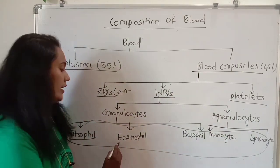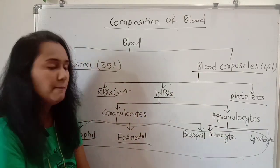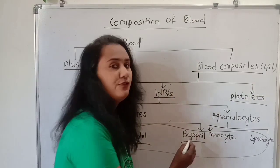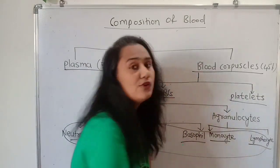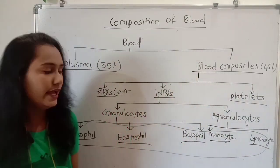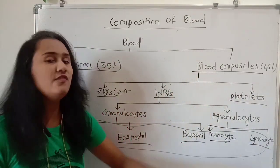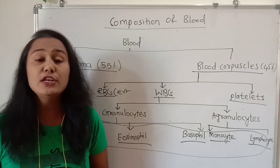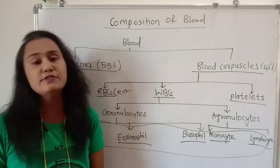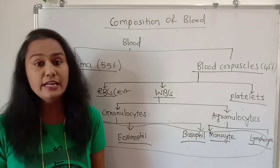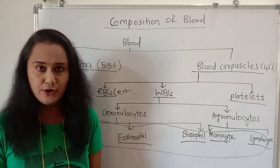The five types are: neutrophil, eosinophil, basophil, monocyte, and lymphocyte. These are the five types of leukocytes, means WBC, which are present in the blood.